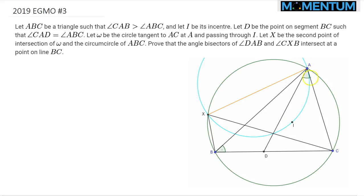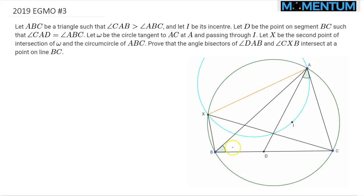We let this circle also intersect the circumcircle of triangle ABC at the point X, as you can clearly see in the picture. And finally, we would like to show that the angle bisectors of angle DAB and angle CXB intersect on segment BC.